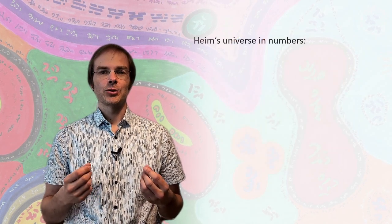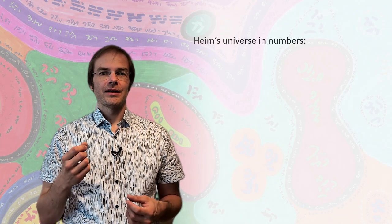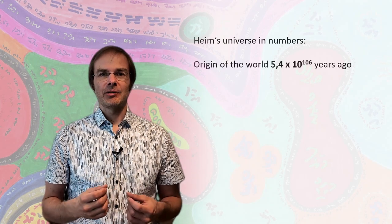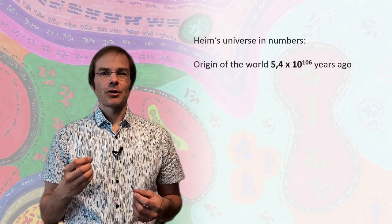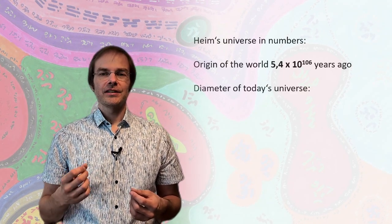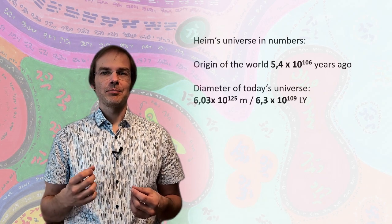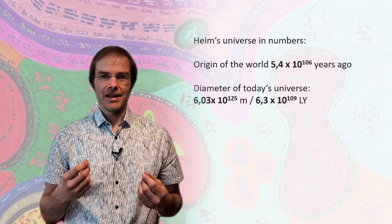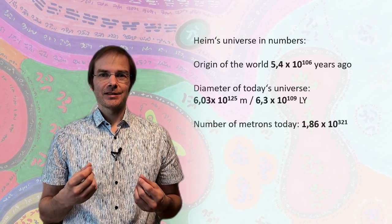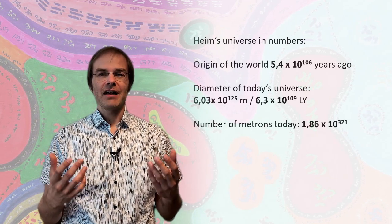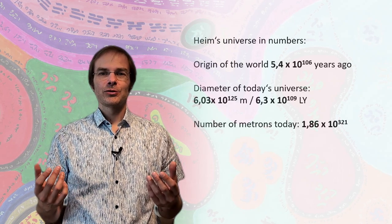And for the present day, Heim derived numbers which give you goosebumps if you speak their names. The origin of the world lies in an unimaginable distant past, as far back as 54 quattro-trigintillion years. The diameter of today's universe is 603 quattro-trigintillion meters. That's still 63 quattro-trigintillion light years. And the number of metrons at present is about 1.6 cent-sixtillion.